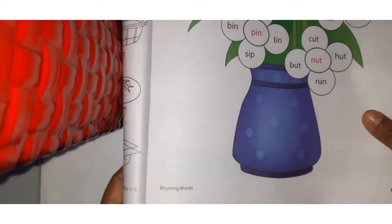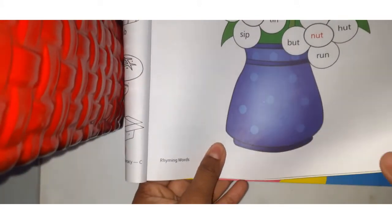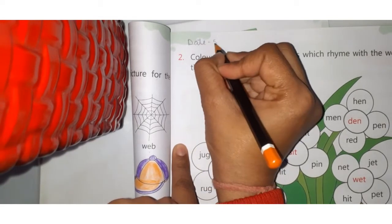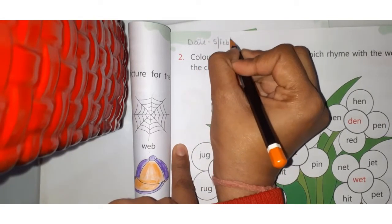Please open page number 33. Here, page number 33. Write the date. Today is 5th February 2021.